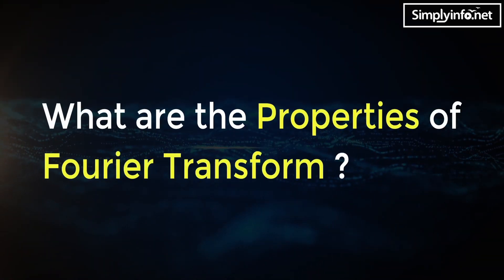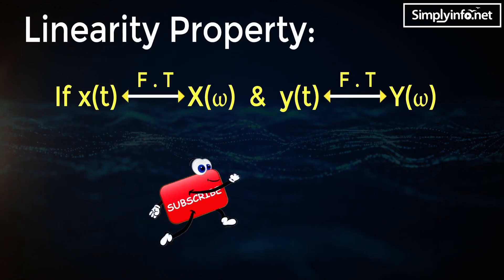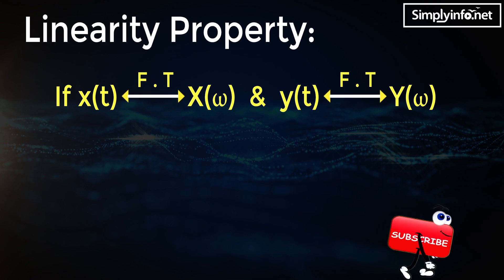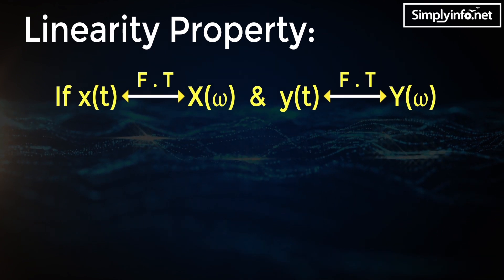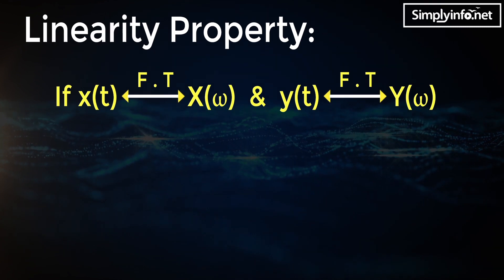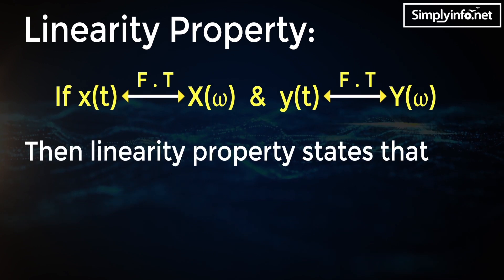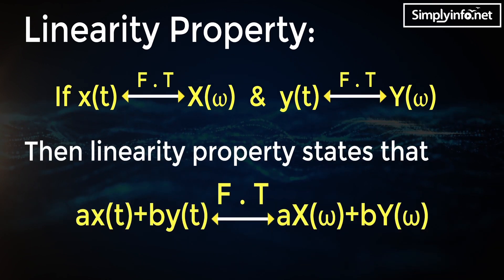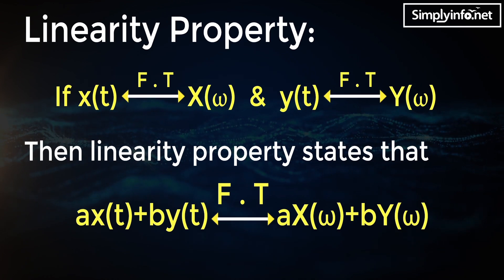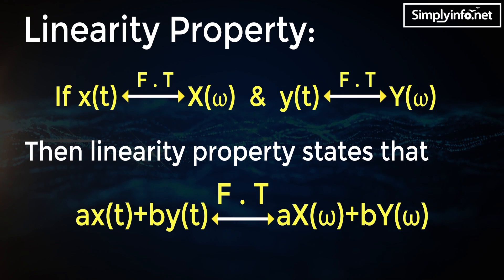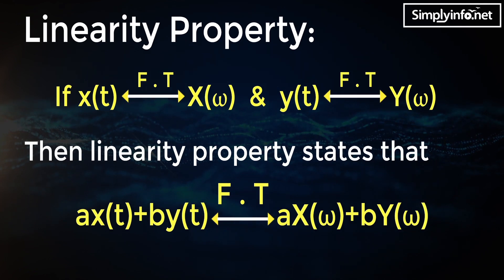What are the properties of Fourier transform? Linearity property: if Fourier transform of x(t) is X(ω) and Fourier transform of y(t) is Y(ω), then the linearity property states that Fourier transform of a·x(t) + b·y(t) is equal to a·X(ω) + b·Y(ω).